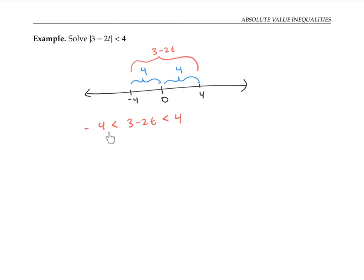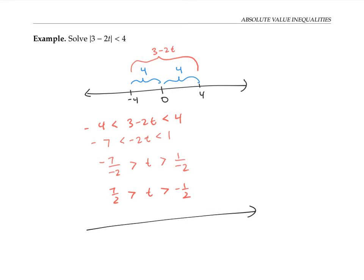First, I'll subtract three from all three sides to get negative seven is less than negative two t is less than one. And now I'll divide all three sides by negative two. Since negative two is a negative number, this reverses the directions of the inequalities. Simplifying, I get seven halves is greater than t is greater than negative one half. So my final answer on the number line looks like all the stuff between negative one half and seven halves, but not including the endpoints. In interval notation, I can write this as soft bracket negative one half, seven halves, soft bracket.